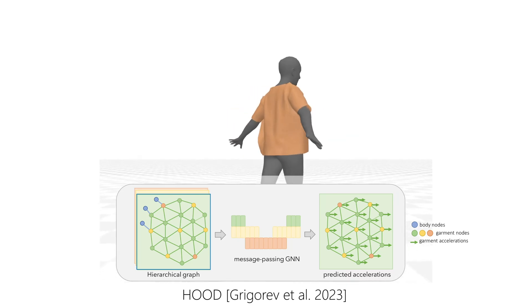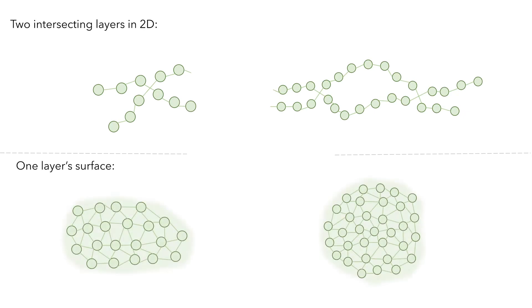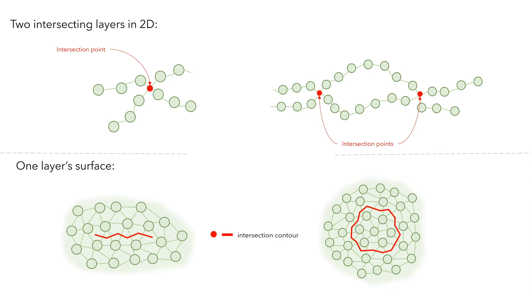To better understand these changes, let's look at the 2D representation of two intersecting layers and the segment of one layer's surface. We first find the contours of the intersections between layers and categorize the mesh nodes as either repelled or non-repelled, depending on their position relative to the contours.